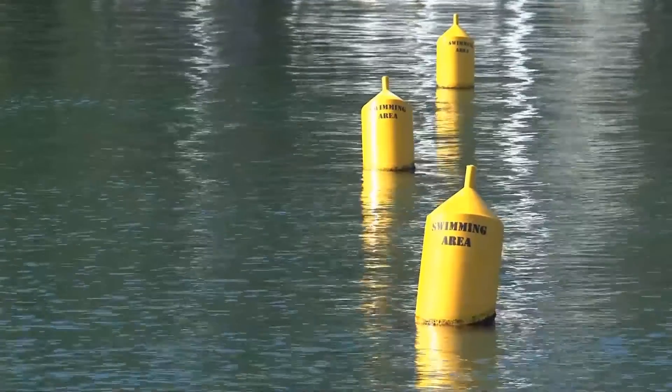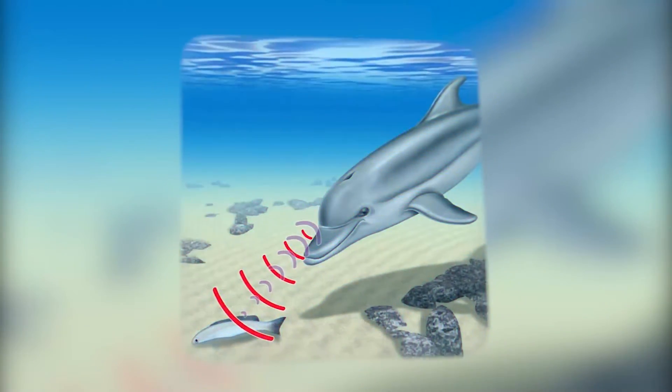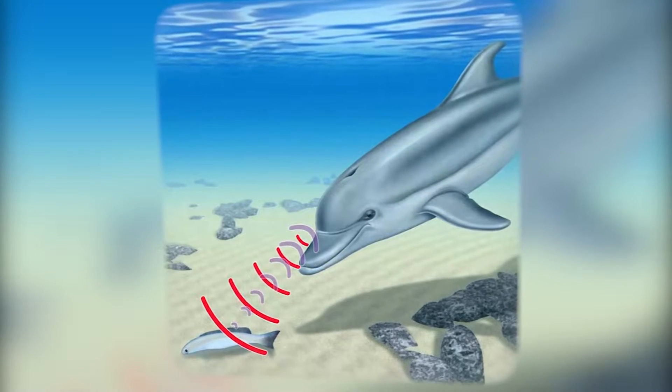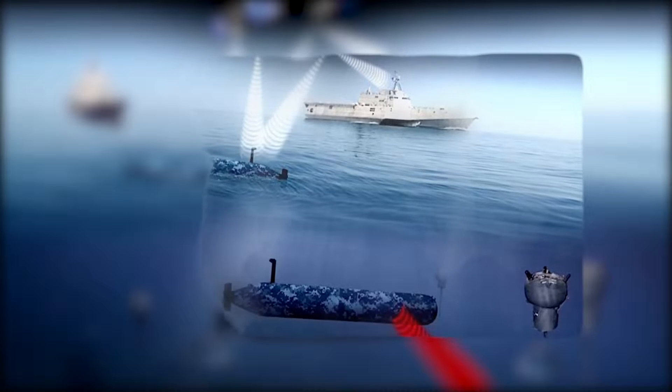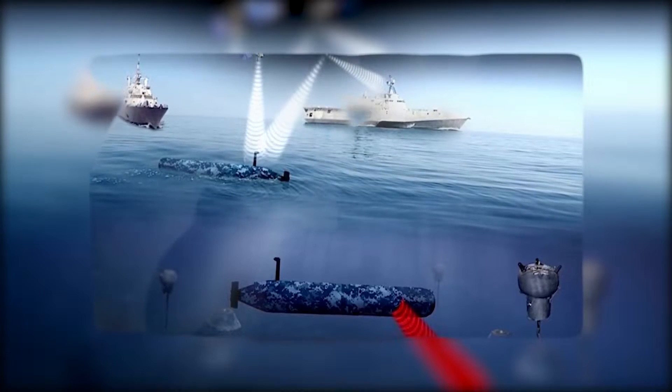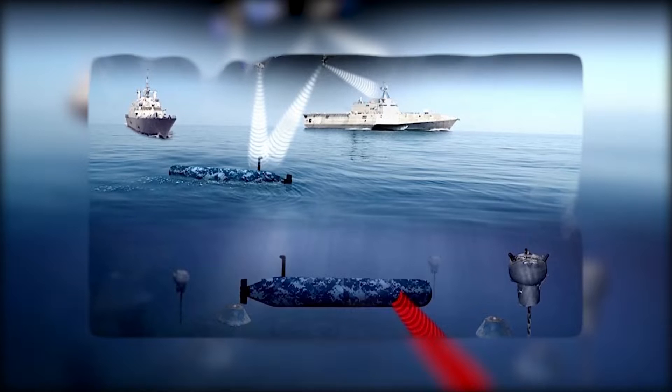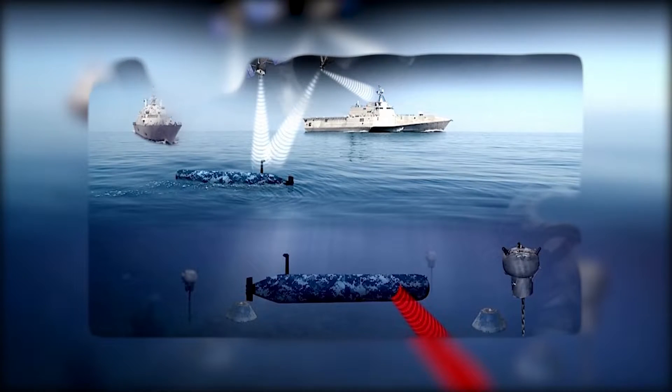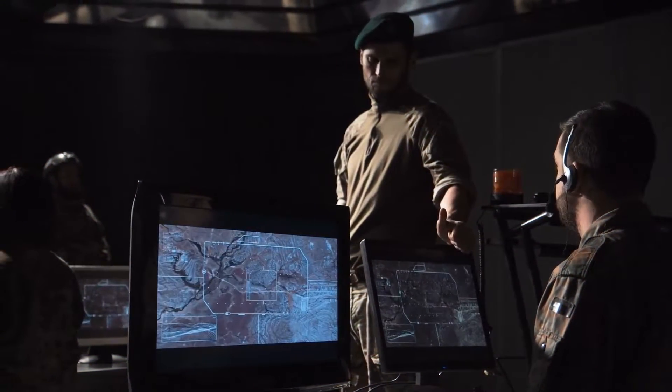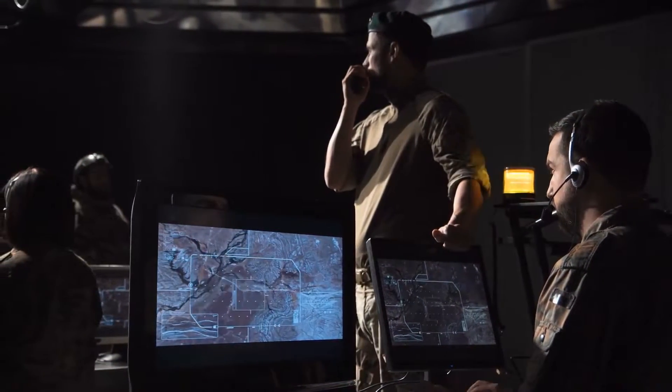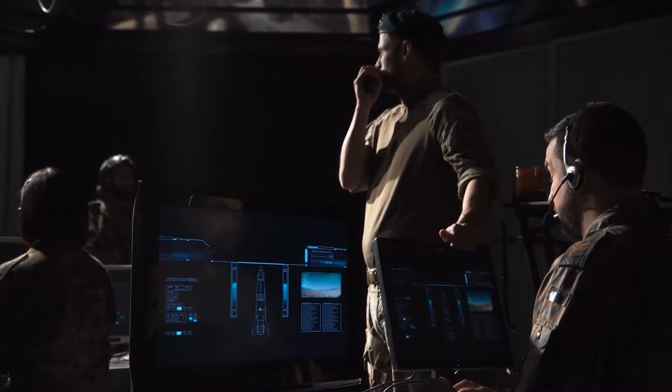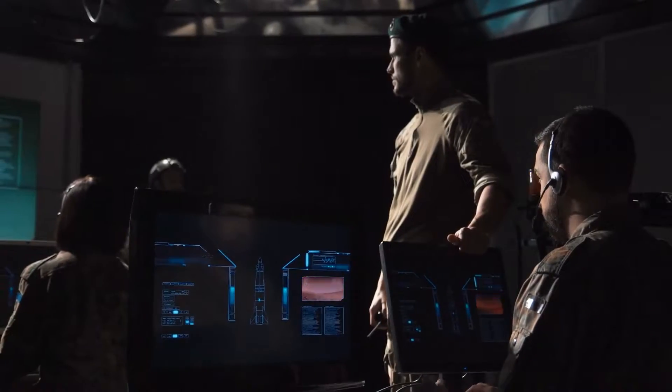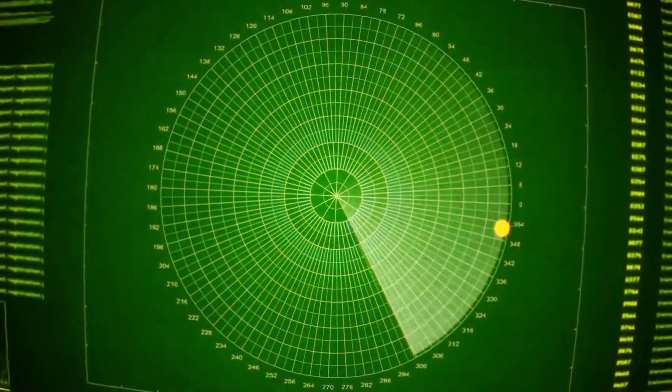The active method detects the sound reflected from the target or the echo emitted by the sonar. The method is also called echo direction finding or echolocation. Sonar and sonobuoy operate by this principle. Simply put, the active method works by the principle of dolphin or whale echolocation. A special device emits a directional sound signal of a certain frequency. The signal reaches the target, is reflected from it, and is captured by special sensors when it returns. As a result, we get a very accurate picture of the underwater environment.